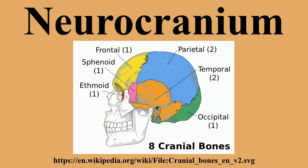In humans, the neurocranium is usually considered to include the following eight bones: one ethmoid bone, one frontal bone, one occipital bone, two parietal bones, one sphenoid bone, and two temporal bones. The ossicles are usually not included as bones of the neurocranium. There may variably also be extrasutural bones present.